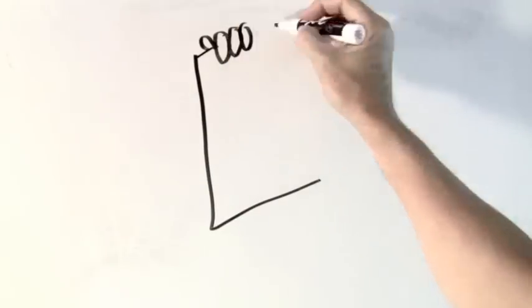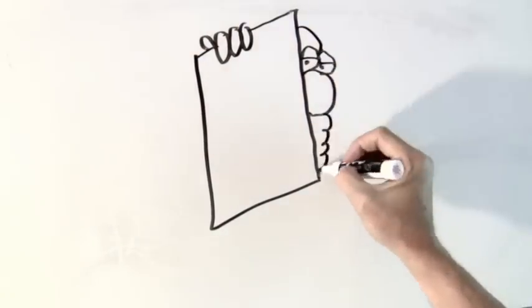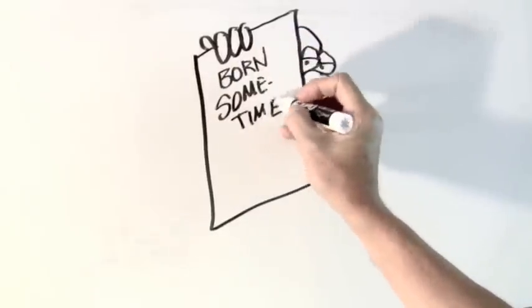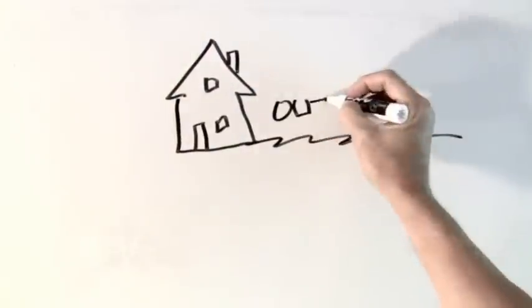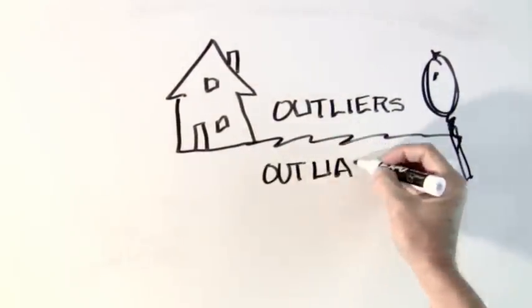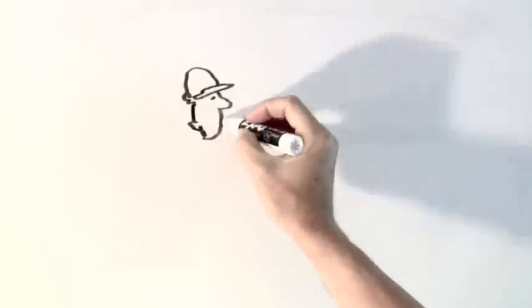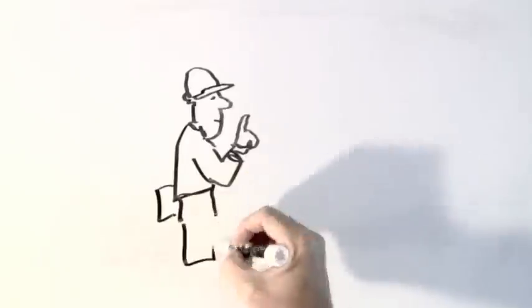Counting people older than 100 has been a problem for the Census Bureau for a very long time. Since the government doesn't request birth certificates to prove age for the decennial census, it can sort through household outliers to find suspicious patterns. In general, though, the Census Bureau has consistently overstated the number of centenarians for a long time.